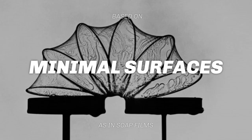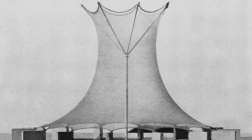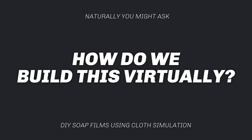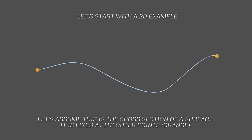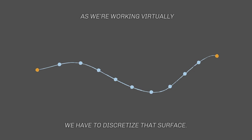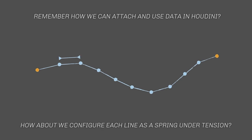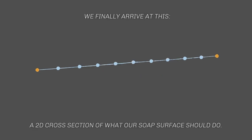All of this behaves very similar to what's called a minimal surface — the behavior we see in soap films spanning between structures or in stretchy fabric. So how do we build this virtually? Let's talk about DIY soap films using cloth simulation. Starting with a 2D example: assume this is a cross-section of a surface fixed at the outer orange points. We discretize it by uniformly distributing points along the surface and connecting them linearly. Then we attach data to those points to make them behave as springs pulling together, like stretched rubber lines. Step by step, we simulate and update the positions of those points, converging to a solution.